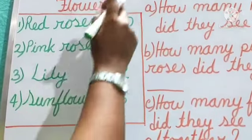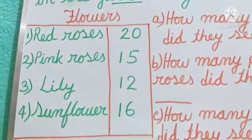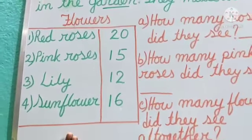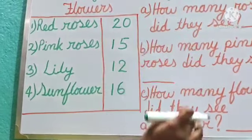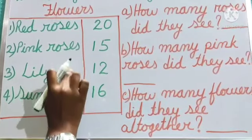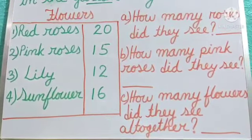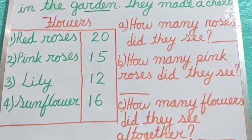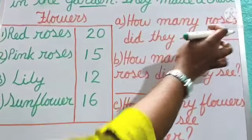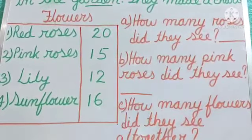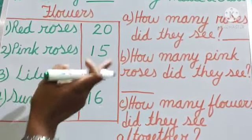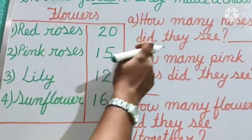Children, you will also note down the question, then make the chart, and below the chart write down all the questions. Now let us read the questions. Number 1: How many roses did they see? From the chart we have to give the answer.